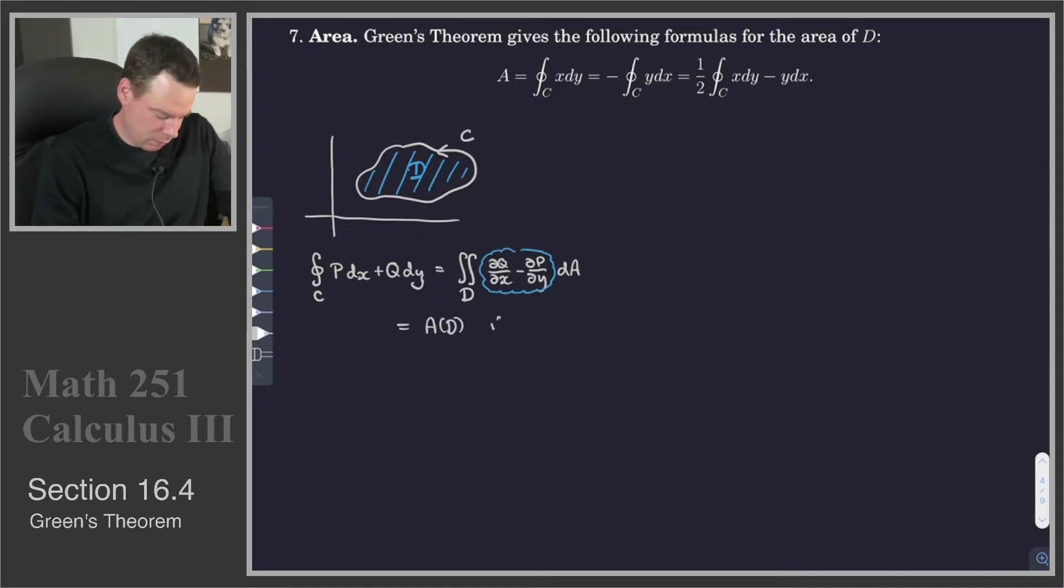So we get that this is the area of D if dQ/dx minus dP/dy is equal to 1.